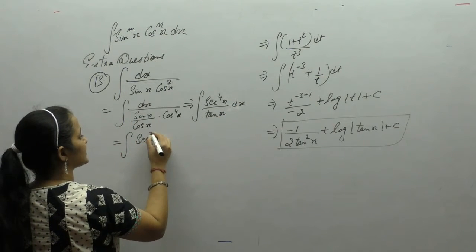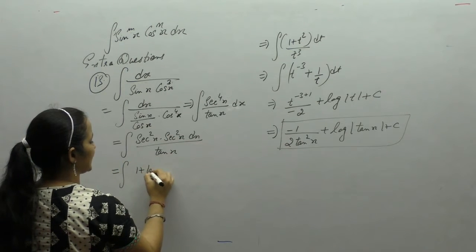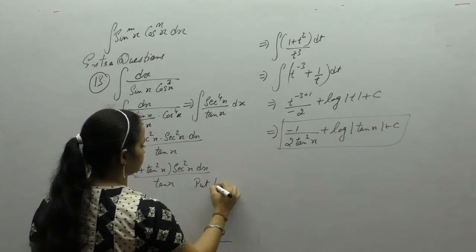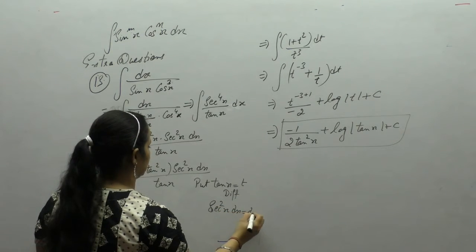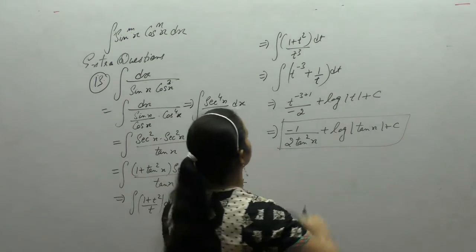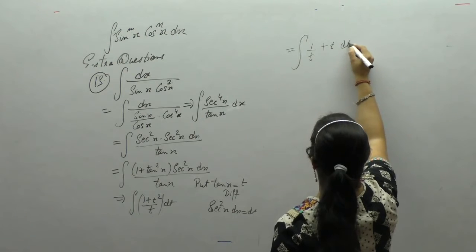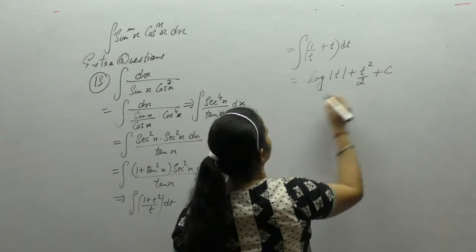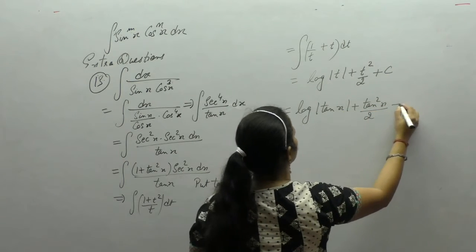Write sec 4 as sec square x into sec square x upon tan x. Write sec square as 1 plus tan square x. Now put tan x as t; derivative of tan x is sec square x dx equals dt. We get 1 plus t square upon t dt, which is 1 upon t plus t dt. Integral of 1 upon t is log t, and integral of t is t square upon 2. Substituting back: log of tan x plus tan square x by 2 plus c.